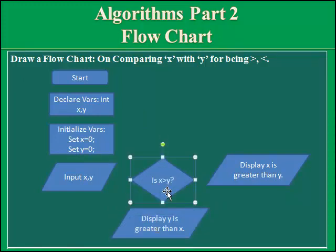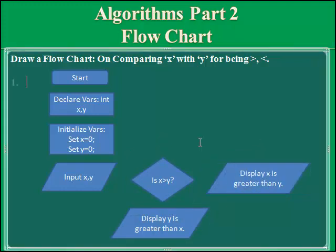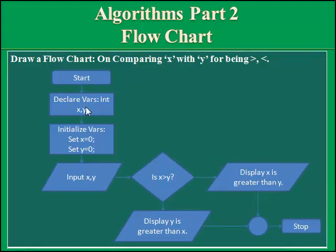Just make a sequence of this so that this will be in a symmetric order. I'm going to connect this all. Now you can see the flow: start, declare variables, initialize variables, set X equals to 0, set Y equals to 0, input X Y, then X Y is compared here. Is X greater than Y? Yes, if yes then do this. If no, then do this.